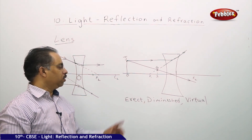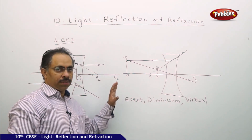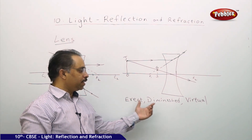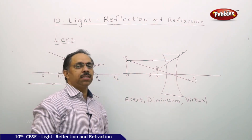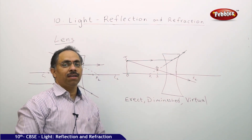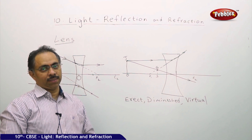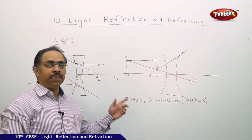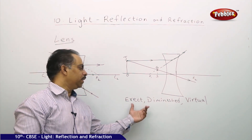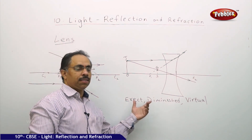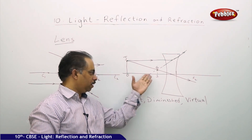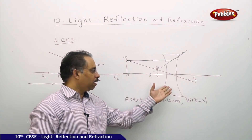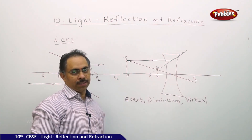If you compare and recall, this is the same nature of images formed by convex mirrors. So when it comes to lenses, the same types of images are formed in concave lenses.